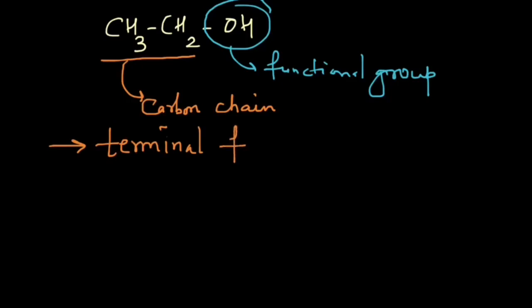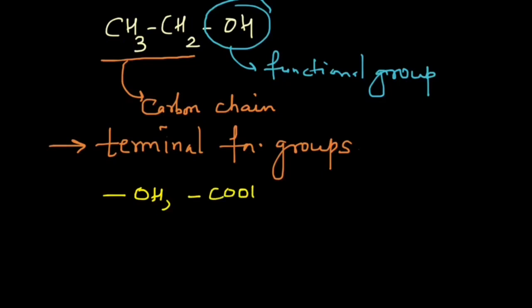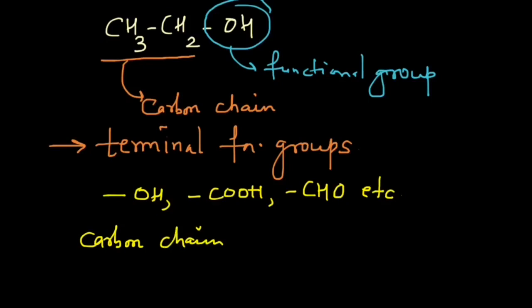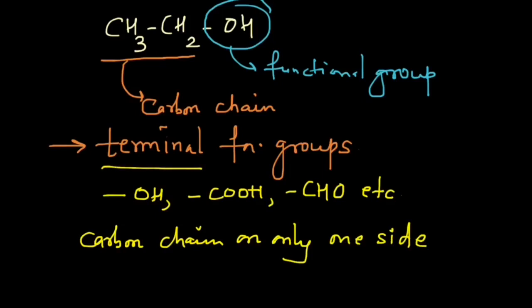Terminal functional groups are those groups which are connected to the carbon chain on only one side. For example, –OH, –COOH, or the aldehyde group –CHO. All these groups have a carbon chain on only one side, so we call them terminal functional groups.